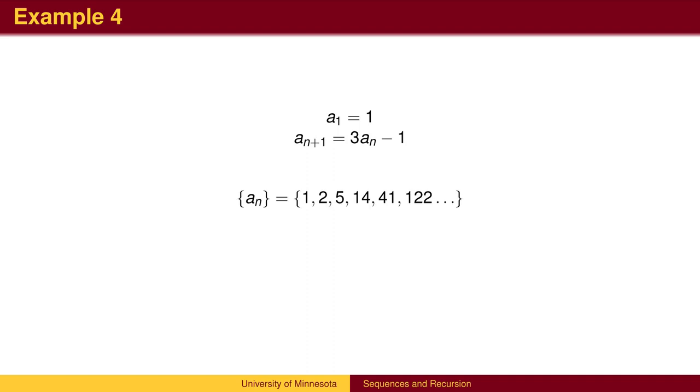The third element is 3 times 2 minus 1, which equals 5. The fourth element is 3 times 5 minus 1, which is 14. 3 times 14 minus 1 is 41, and so on.